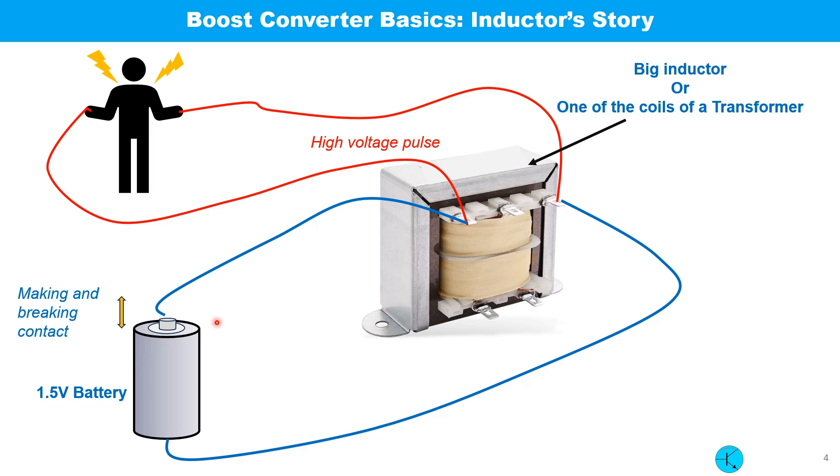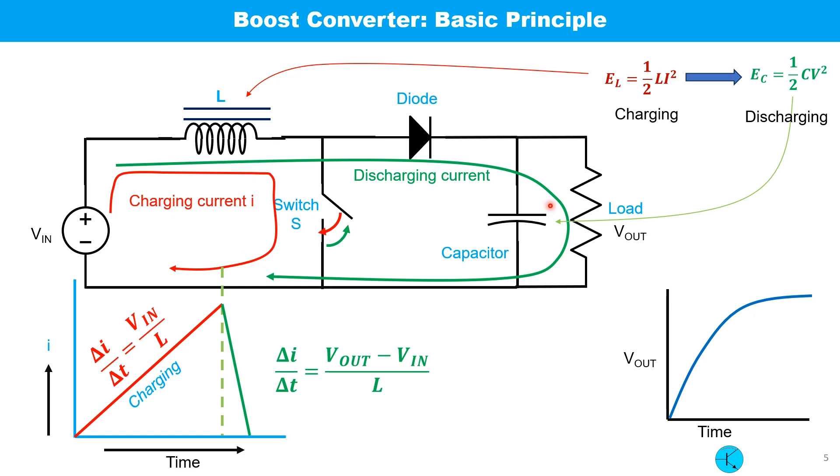This is the basic circuit of a boost converter. When the switch AC is closed, current starts flowing through the inductor. The rate of charging is shown by the red line: V_in by L, where L is the inductance of the inductor. When the switch is released, the stored energy in the inductor is going to the load and the capacitor through this diode. The discharge rate is shown here: V_out minus V_in divided by L. As the switching on and off process is repeated again and again, slowly the output voltage goes higher and higher.